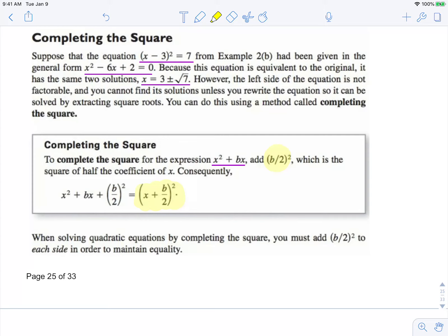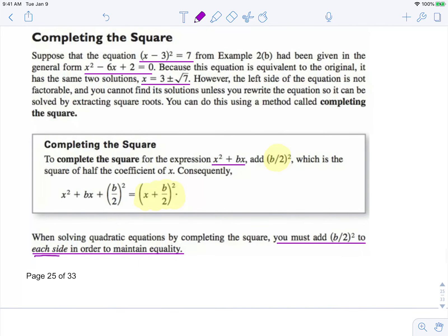When solving quadratic equations by completing the square, you must add b over 2 squared to each side of the equation to maintain equality.